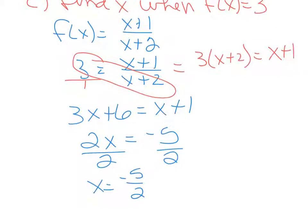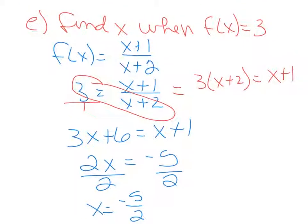If we go back, I'm just going to scroll a little bit here. We were trying to find x when f(x) equals 3, so our x came out to be -5/2. y was 3, so when we put this as an ordered pair, x is -5/2 and y is 3.